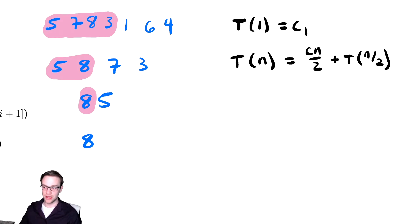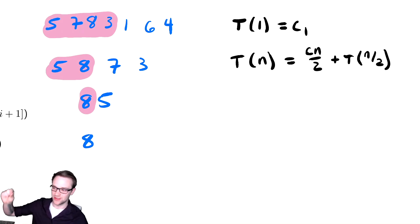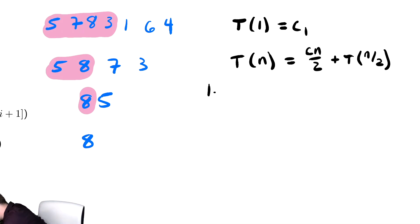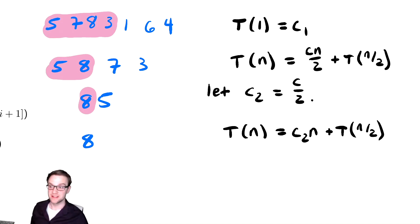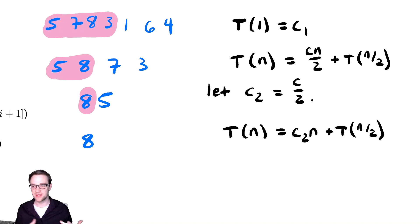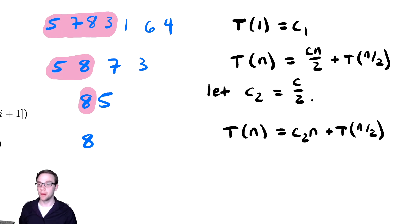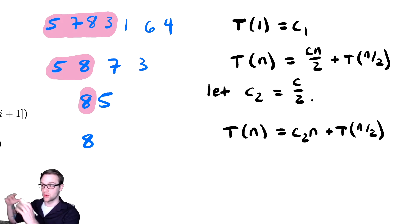I want to introduce something that can be very helpful in these problems. If you notice, I called this cn over 2. I am going to let c₂ equal c over 2. If I do that, I get T(n) is equal to c₂n plus T(n/2). Notice by doing this I have changed the problem's constants to make them more convenient for my own purposes. The constants were arbitrary anyway, so distinguishing between c and c₂ isn't necessarily super important. But this can help us sometimes in analyzing things. So we now have a recurrence relation and a corresponding base case. We are going to label the recurrence relation with a little star next to it.